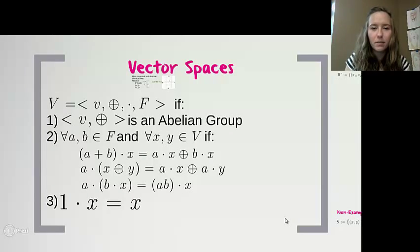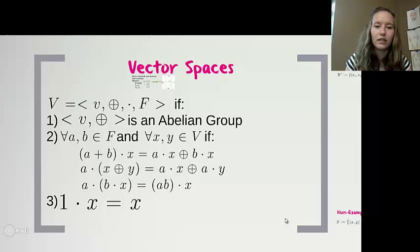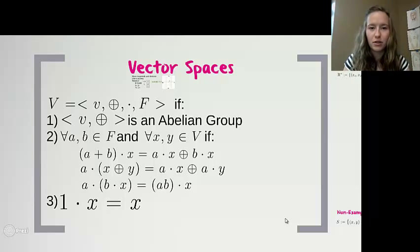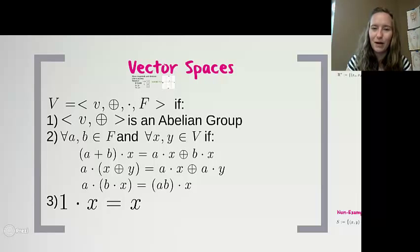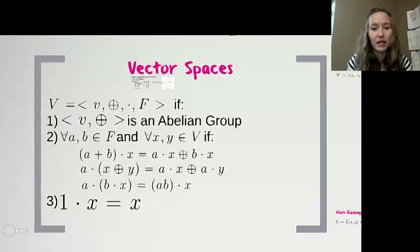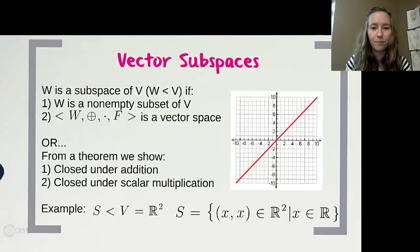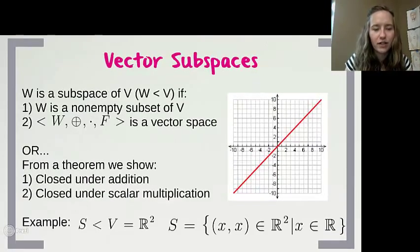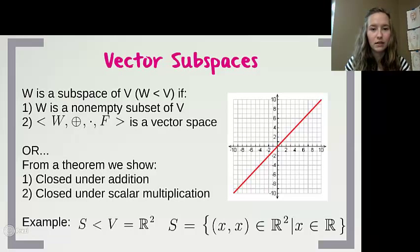To summarize: a vector space needs to be an abelian group under the first operation, have two distributive properties, an associativity property, and the multiplicative identity. Now that we know what a vector space is, we can talk about what a vector subspace is.